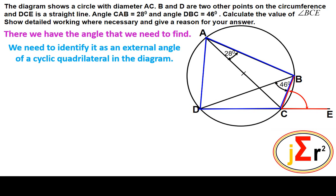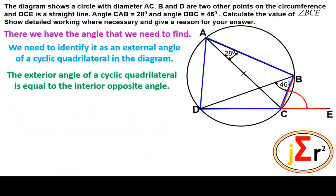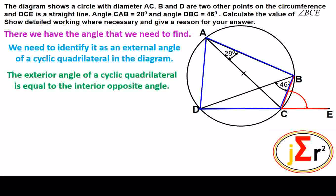There we have the cyclic quadrilateral. The exterior angle of a cyclic quadrilateral is equal to the interior opposite angle. A cyclic quadrilateral has all of its vertices in contact with the circumference of the same single circle. If all vertices of a quadrilateral lie on the circumference, then we are sure that we have a cyclic quadrilateral.